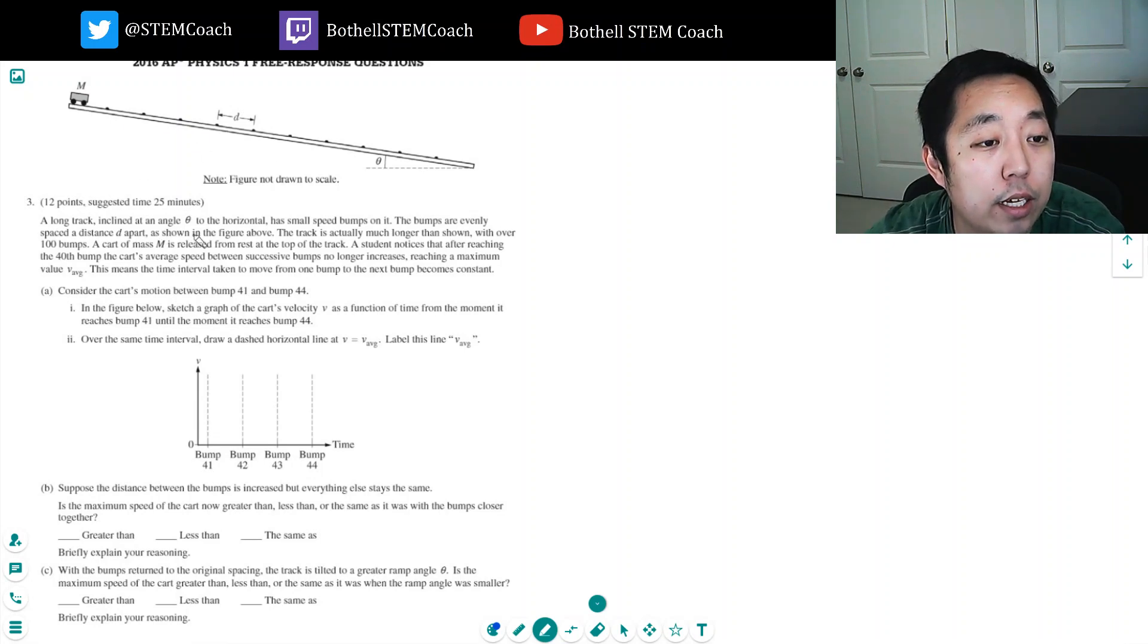A long track at an inclined angle theta to the horizontal has small speed bumps on it. The bumps are evenly spaced distance d apart as shown in the figure above. The track is actually much longer than shown with over 100 bumps. A cart of mass m is released at rest from the top of the track. A student notices that after reaching the 40th bump, the cart's average speed between successive bumps no longer increases, reaching a maximum value v average. This means that the time interval taken to move from one bump to the next bump becomes constant.